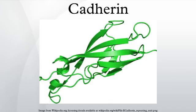Structure and function: cadherins are synthesized as polypeptides and undergo many post-translational modifications to become the proteins which mediate cell-cell adhesion and recognition. These polypeptides are approximately 720 to 750 amino acids long. Each cadherin has a small cytoplasmic component, a transmembrane component, and the remaining bulk of the protein is extracellular.